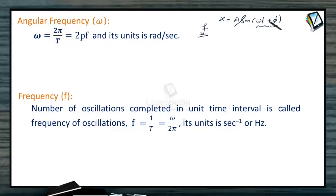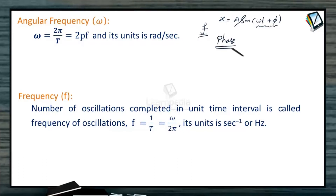The duration in which this angle changes by 2 pi will be the time period. The term omega t plus phi is known as the phase of the particle.